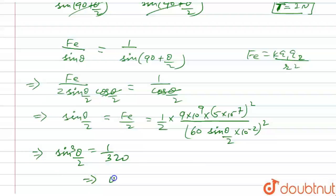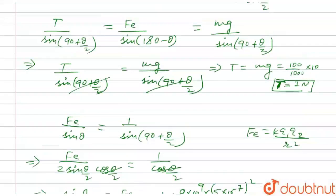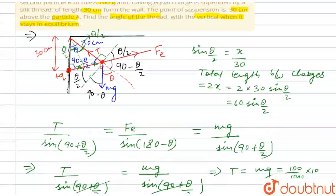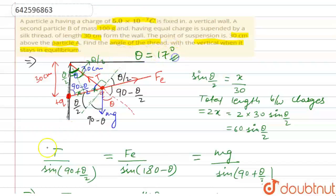It's very complicated, but we have done it. From sine³(theta/2) = 1/320, we get theta = 17 degrees. So the angle of the thread with the vertical in equilibrium is theta = 17 degrees. This is the final answer.